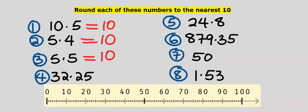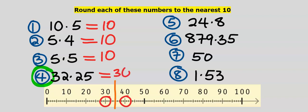Next, consider 32.5, which is between 30 and 40. Halfway between them is 35. 32.5 is closer to 30 than to 40. Our answer is 30.